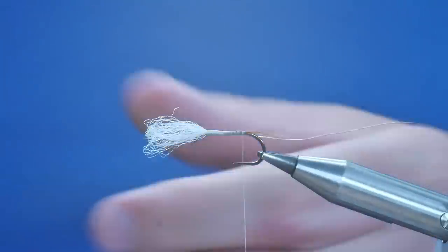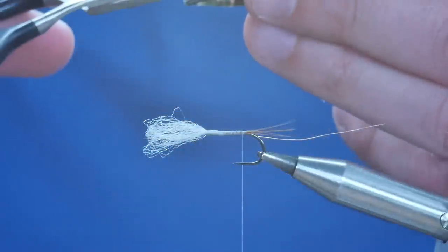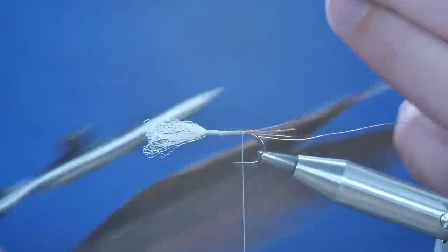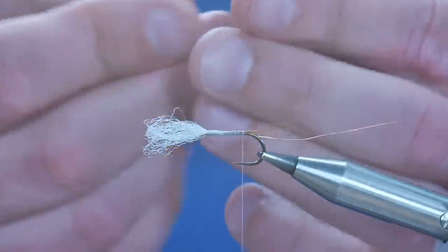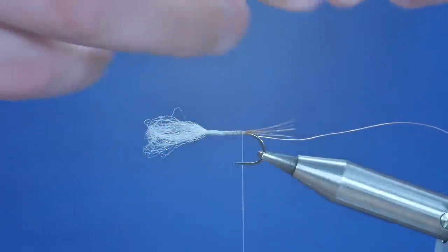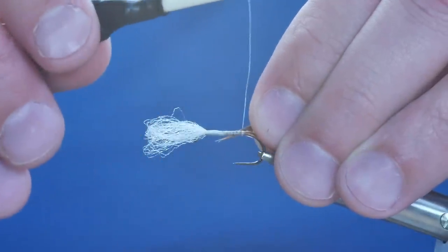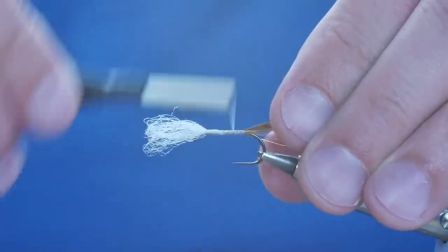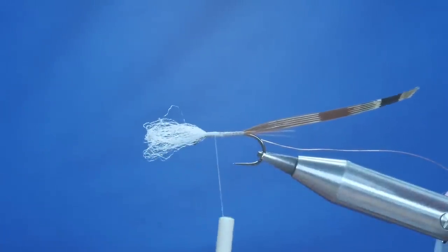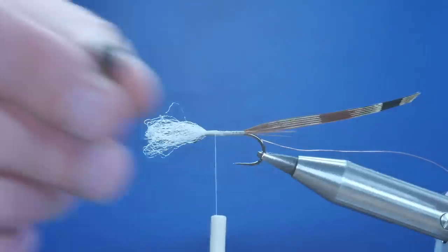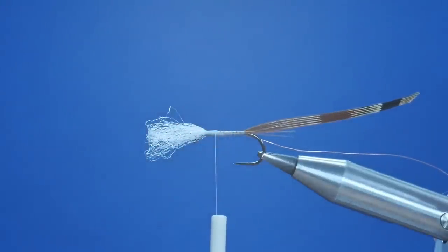Okay next I'm going to use some pheasant tail that I've got here. Take off maybe four or five strands. Like so. And you want to catch them in at the tips. So I'll pull that through, transfer it to my left hand, and then catch it in. Like so. And that's all going pretty well. Now I'm going to stop there. So I've stopped my thread about an eighth of an inch back from where my loop of arrow wing is.